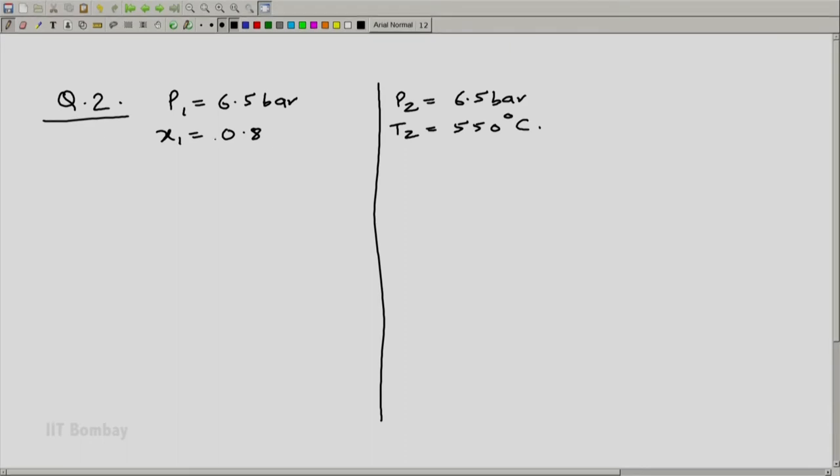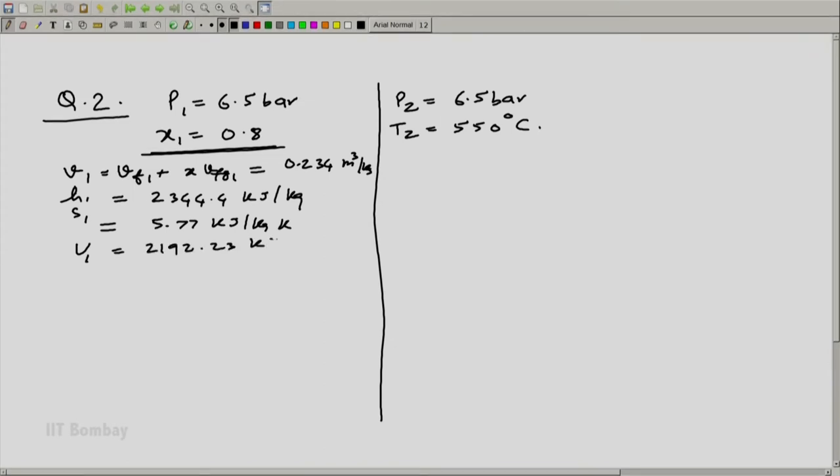After interpolating the values at 0.65 MPa, we will calculate the values for given x value as 0.8. We get as v1 is equal to vf1 plus x time vfg1. Similarly we have got values of h1 and s1. v1 as we get are 0.234 meter cube per kg, h1 we get as 2344.4 kilojoule per kg and s1 we get as 5.77 kilojoule per kg Kelvin and u1 also we get as 2192.23 kilojoule per kg. These are the values at state 1.